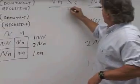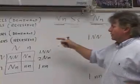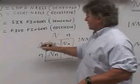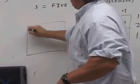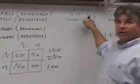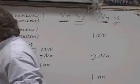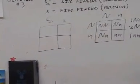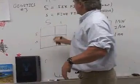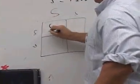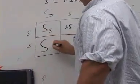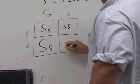Now you want to look at the cross for the second trait, which is for fingers — six fingers versus five fingers. You make another Punnett square. You take the father's genes for fingers, which is big S, little S, and the mother's genes for fingers, which is little S, little S. You intersect them and you get: big S little S, little S little S, big S little S, and little S little S.